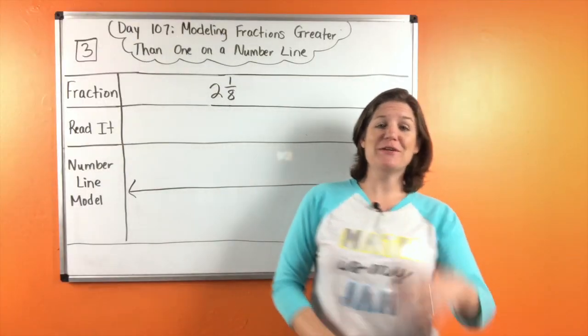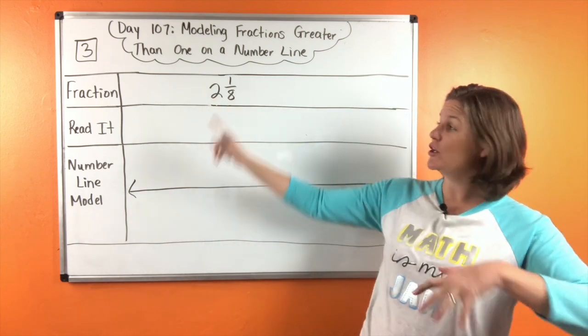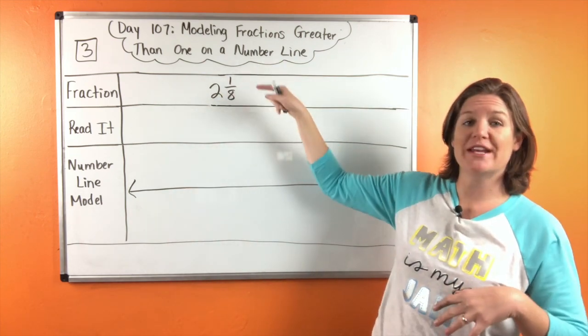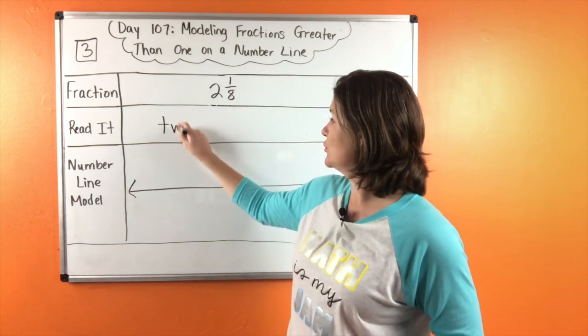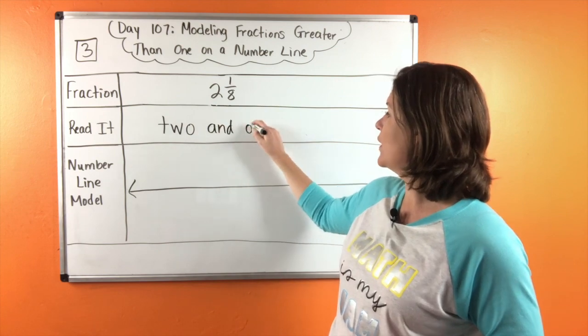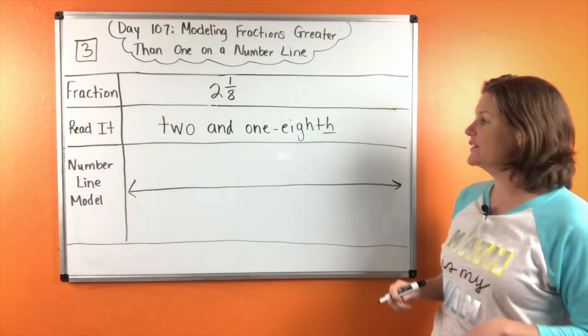All right, everybody. Welcome back to number three. We have the fraction right here, the mixed number two and one eighth. Let's write it down. So check your spelling. Two and one eighth. Make sure eighth has the th on the end.